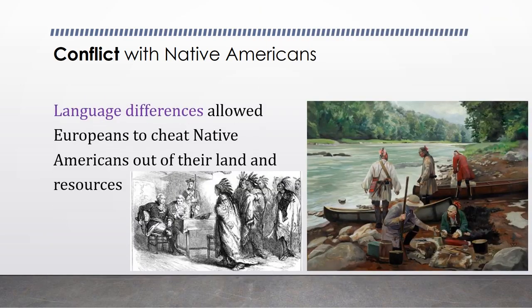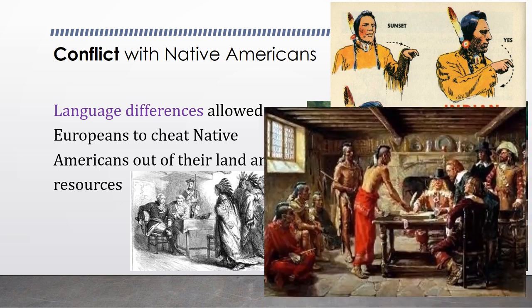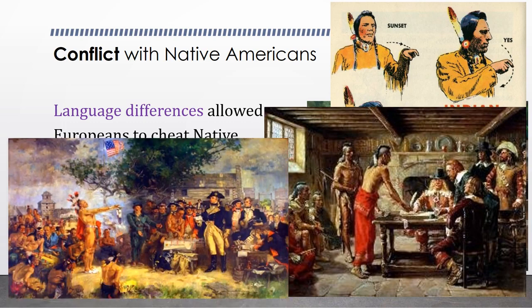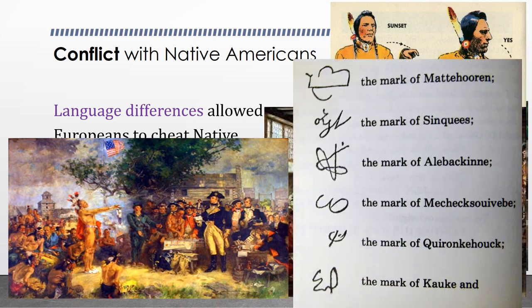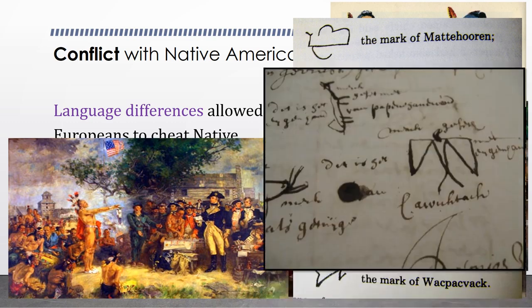Language differences allowed the Europeans to cheat the Native Americans out of their land and resources. Sign language can only communicate so much between two people groups without exact words and explanations. The English were not the only ones who made treaties with the Native Americans and cheated them — the French did it too. Many of the French forts talked about earlier were the settings of these treaty meetings where the Native Americans lost so much. We can see here some of the signatures of Indians who signed these treaties — many of them drew Indian symbols as their mark to represent their names.